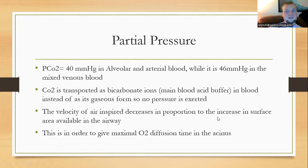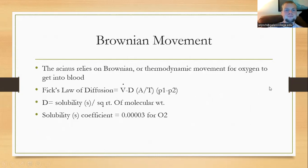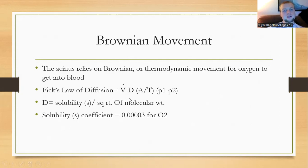The velocity of air decreases in proportion to the increase in surface area, to give maximum time for oxygen to diffuse through the alveoli. At the acinus or alveolar level, gas movement follows Brownian or thermodynamic movement. This follows Fick's law of diffusion, where D represents solubility divided by the square root of the molecular weight of the gas. The solubility coefficient S for oxygen is 0.00003.